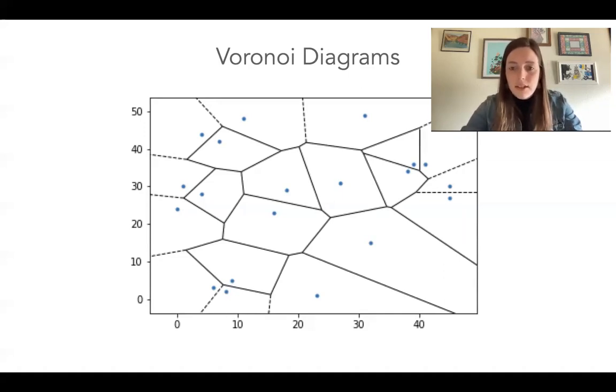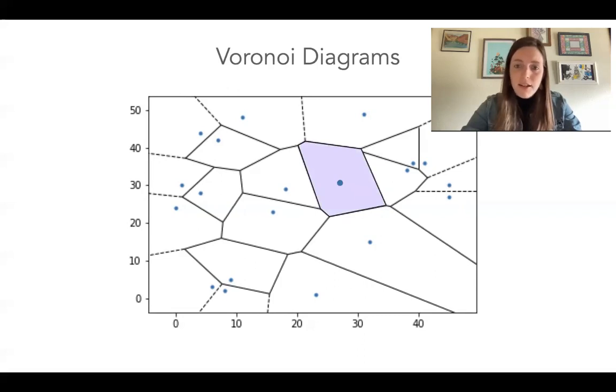So in this example here, any point in this lavender shaded region is going to be closest to the blue point in the lavender shaded region.